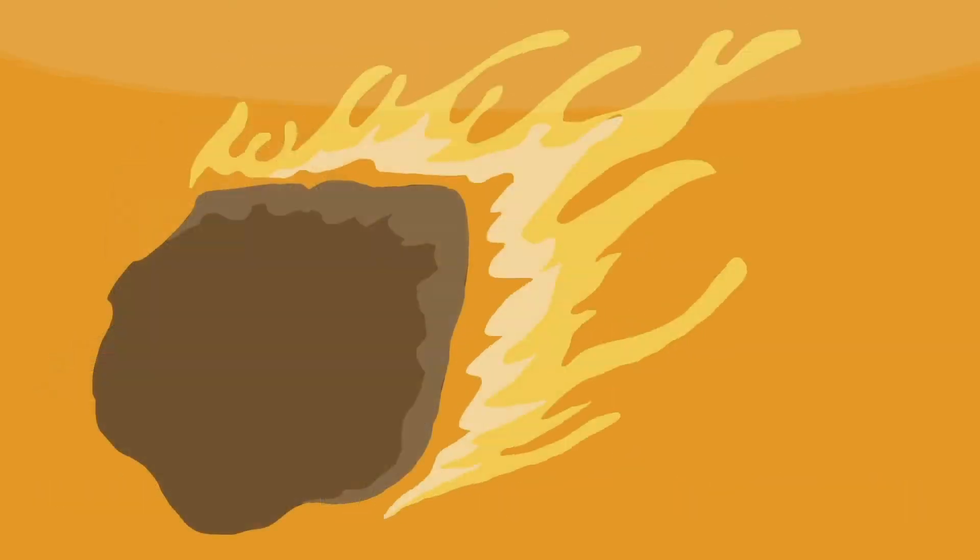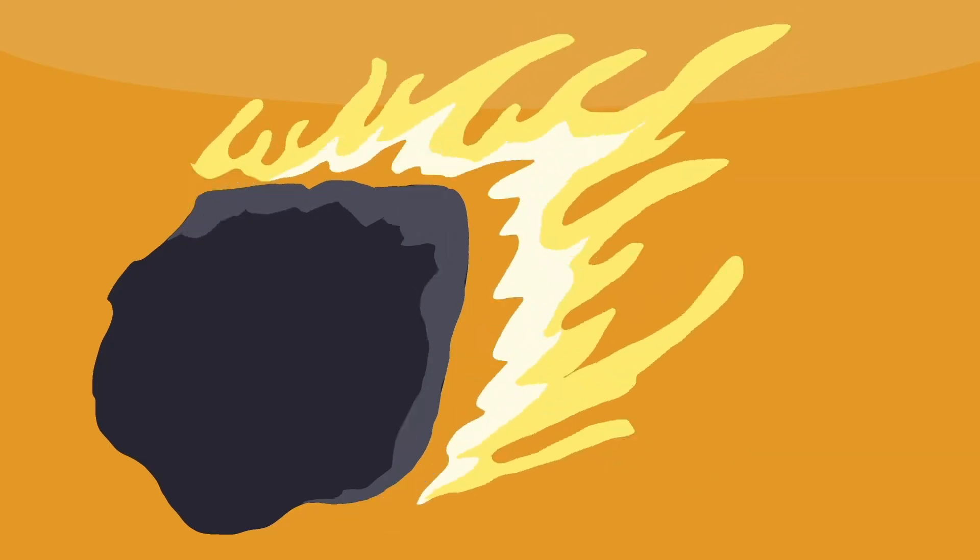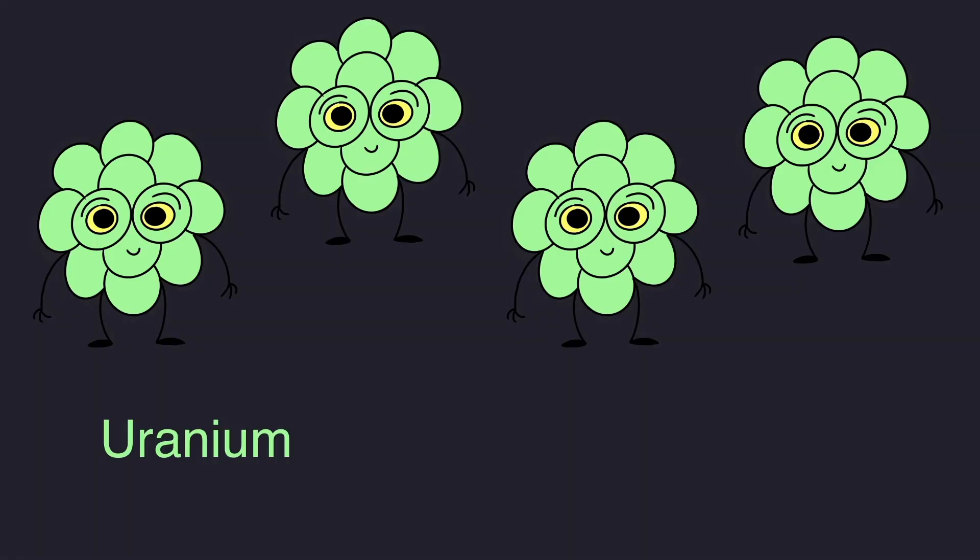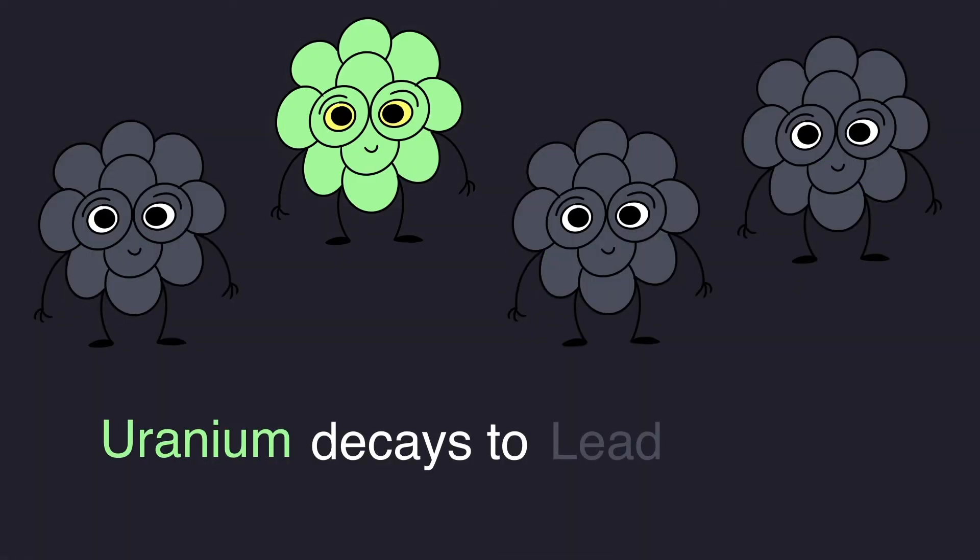Let's look at another example. So here we have a meteor that's crashed to Earth. And we know that when the meteor was created, it was all uranium. But uranium decays to lead. And now there's only one uranium atom to every three lead atoms. So how old is the rock?